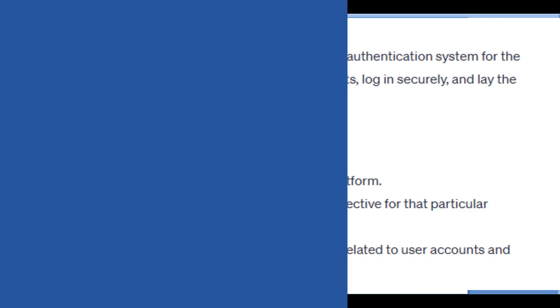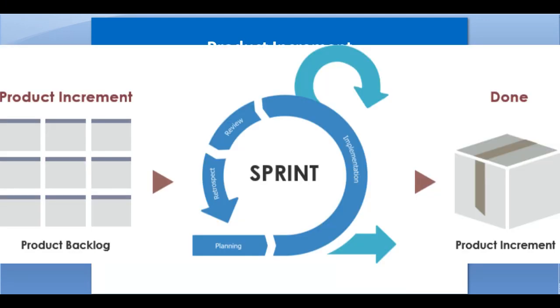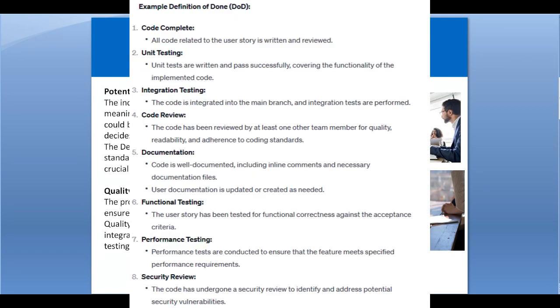After the end of each sprint we have a product increment. Potentially releasable means the sprint increment is designed to be potentially releasable, meaning it adheres to the definition of done — the criteria at which we consider the product completed. The product owner can then decide to release it to end users. The definition of done includes criteria for coding standards, testing, documentation, and any other factors crucial to delivering a high-quality product.